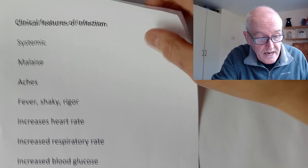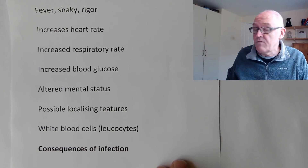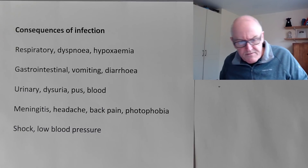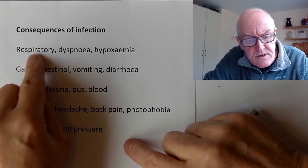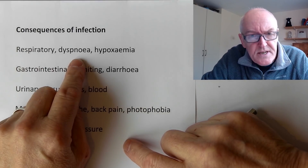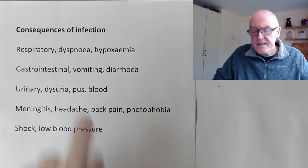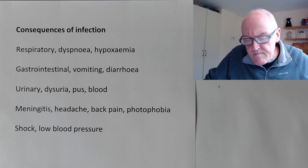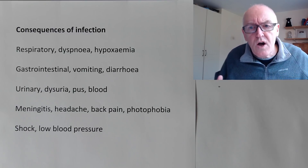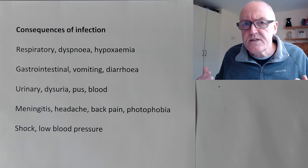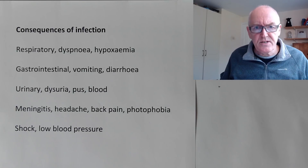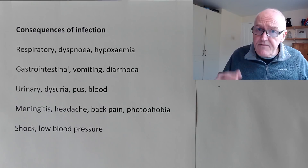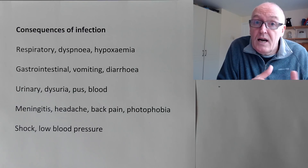Next, we want to look at the consequences of infection. When someone first gets an infection, what happens is you tend to feel unwell but you don't know which part of your body is unwell - you just have this general malaise. You take yourself off to bed, and then it's only after that that the infection localizes to part of the body.